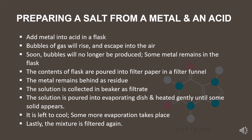Here are the steps of preparing a salt from a metal and an acid. Step 1: Add metal into acid in a flask. Step 2: Bubbles of gas will rise and escape into the air. Step 3: Soon bubbles will no longer be produced, and some metal remains in the flask.